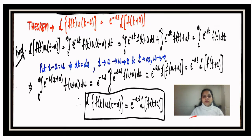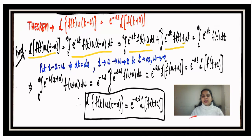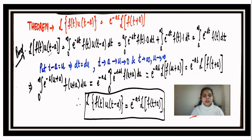To prove this, we apply the basic definition: the Laplace of f(t)·u(t - a) equals the integral from zero to infinity of e^(-st)·f(t)·u(t - a) dt. Breaking into two intervals, from zero to a u(t - a) is zero, and from a to infinity u(t - a) is one. The first integral vanishes, leaving the integral from a to infinity of e^(-st)·f(t) dt. We substitute t - a = u, giving dt = du.